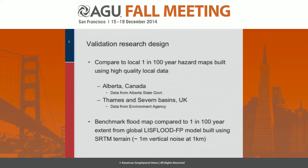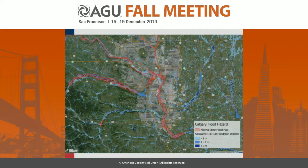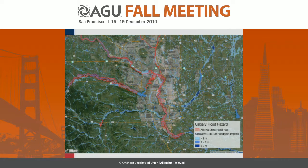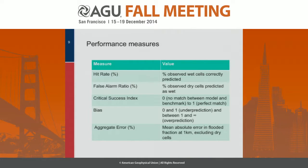Here's the Calgary map. The areas in red are where the Alberta state government has produced HEC-RAS models. The first thing you see is that the global model produces predictions everywhere, even for really quite small river catchments down to a few tens of kilometers squared, and we also do pluvial flooding as well as fluvial. But we're going to do the comparison just where we have benchmark models from the Alberta state government. Performance measures — typical ways of comparing imagery: hit rate, percentage of correct wet cells predicted correctly; false alarm rate; and critical success index.